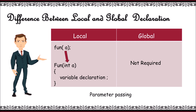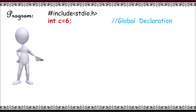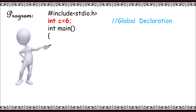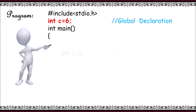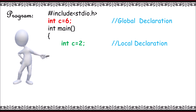Let me explain this particular concept with the help of a program. Here, I have declared int c = 6, which is a global declaration because I have declared c outside the function. And next, in the main function, I have declared c = 2. It is called a local declaration since I have declared this particular c inside a function.